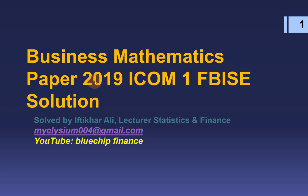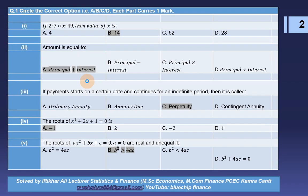The first question is about the MCQs. If 2 over 7 equals X over 49, then the value of X will be 14. Simply, 2 multiplied by 49 and 7 multiplied by X — take these two values on the left and right of the equal sign and solve for X. Second MCQ: Amount equals Principal plus Interest.